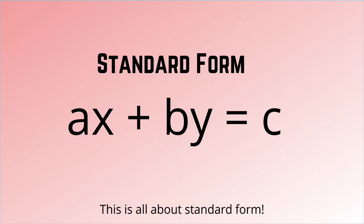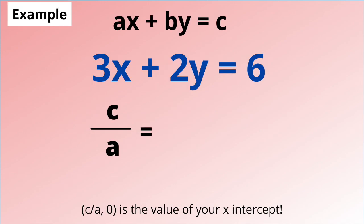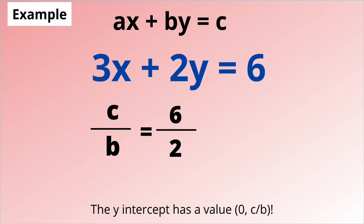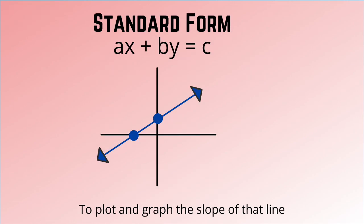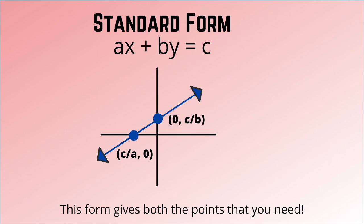This is all about standard form. c/a, zero is the value of your x-intercept. The y-intercept has a value of zero, c/b. To plot and graph the slope of that line, this form gives both the points that you need.